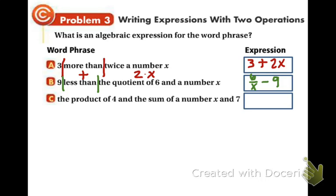And part C says the product of 4 and the sum of a number X and 7. Product of 4 and the sum of a number X and 7. Product of 4. Well, what does product mean? It means multiplication. So we're going to have 4 and we're multiplying this whole next part. The sum of a number X and 7. Sum means add. So we have X plus 7. And there you go. Example 3 is done.